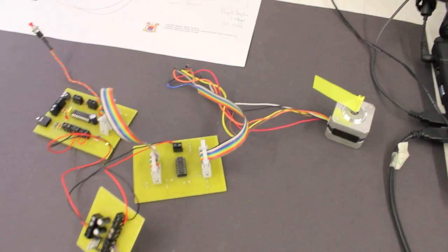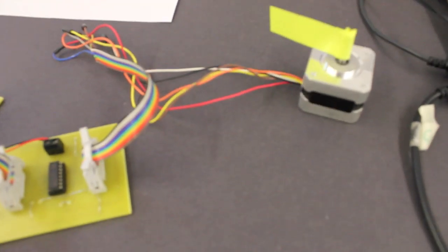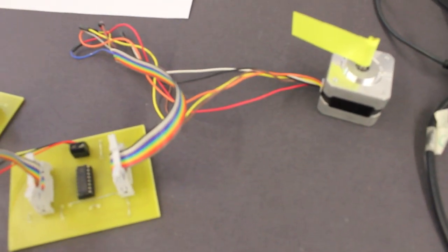So here we have a stepper motor. It's a unipolar stepper motor. You can tell because it has six wires attached, unlike the bipolar ones which will have four wires.